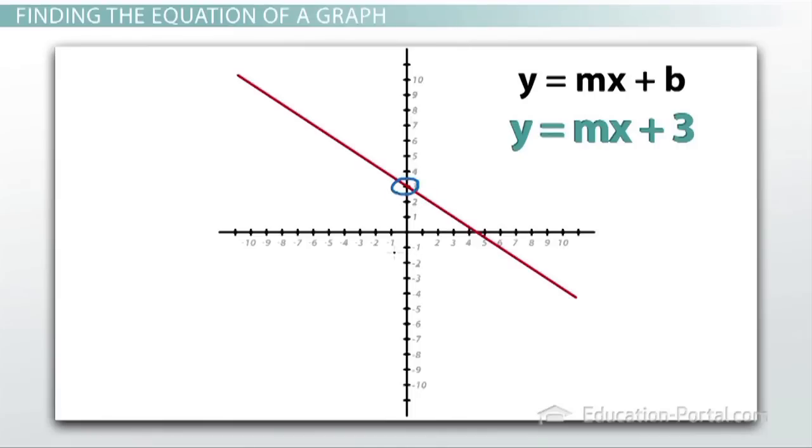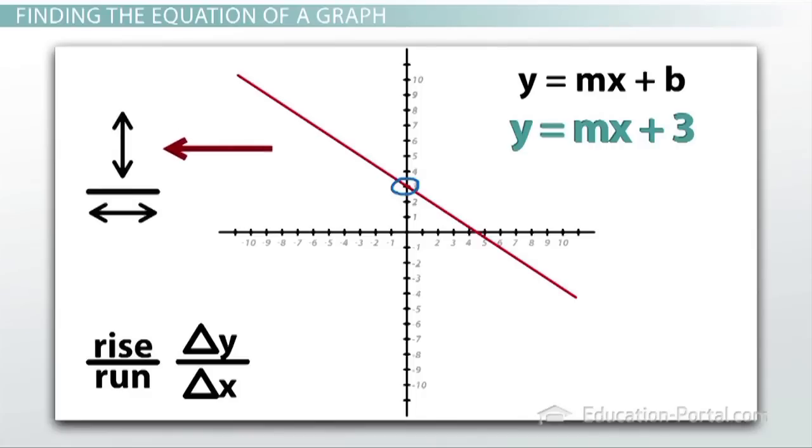The only other thing left to find is the slope. Now there's a lot of different words for the slope and phrases for the slope. Often rise over run is used, or change in y over change in x, oftentimes represented with the little delta symbols. But all that's meaning is that the slope is how much the line goes up and down divided by how much the line goes left and right.